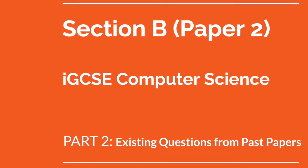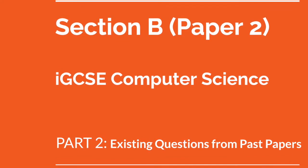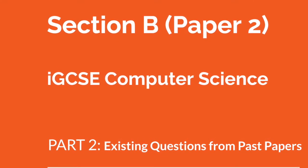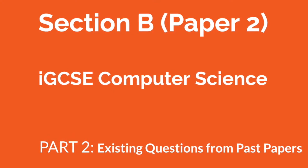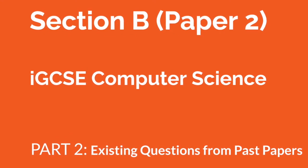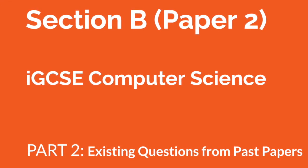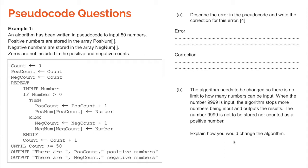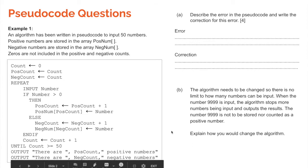We're going to look at Section B of Paper 2, and in particular the pseudocode question, which is usually the first question in Section B of Paper 2. So, IGCSE Computer Science. I've taken a question from the February-March 2020 Paper 2, and it's probably the most difficult pseudocode question I've seen. But don't let that put you off — we're going to go through it. First, I want to explain some differences between pseudocode and actual Python code.